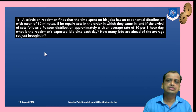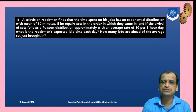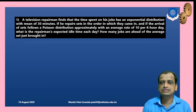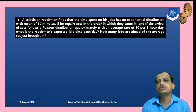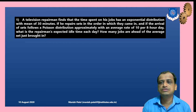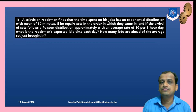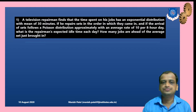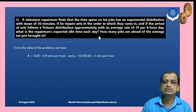Problem 1: A television repairman finds that the time spent on his jobs has an exponential distribution with a mean of 30 minutes, so the service rate distribution is given. If he repairs sets in the order in which they come, with Poisson arrival rate of 10 per 8 hours, what is the repairman's expected idle time each day? We need to find the traffic intensity factor.